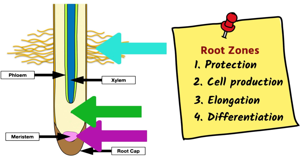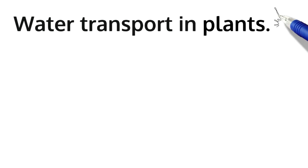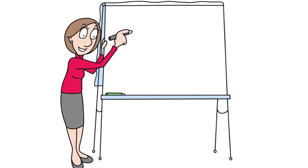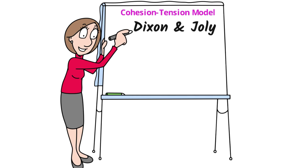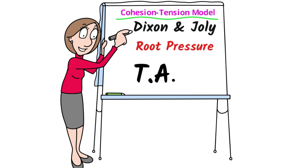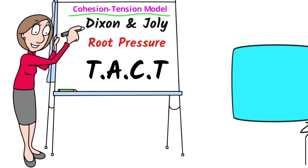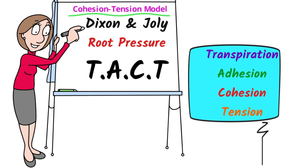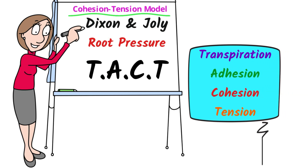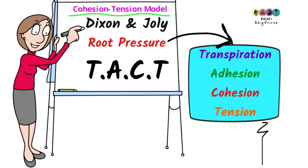Everything discussed so far is part of the broader topic of water transport in plants. You must state that Dixon and Jolly, two scientists from Trinity College in Dublin, put forward the cohesion-tension model. This important model explains how water is transported upwards in a plant against the force of gravity. Before discussing that in an answer, you must give an account of root pressure, then go on to the cohesion-tension model and use the letters TACT to structure your answer — mentioning transpiration, adhesion, cohesion, and tension. This is a very important topic, so spend time revising it for your exams.